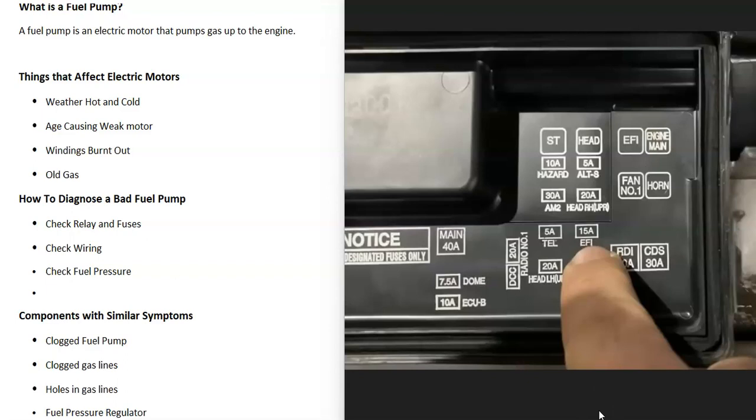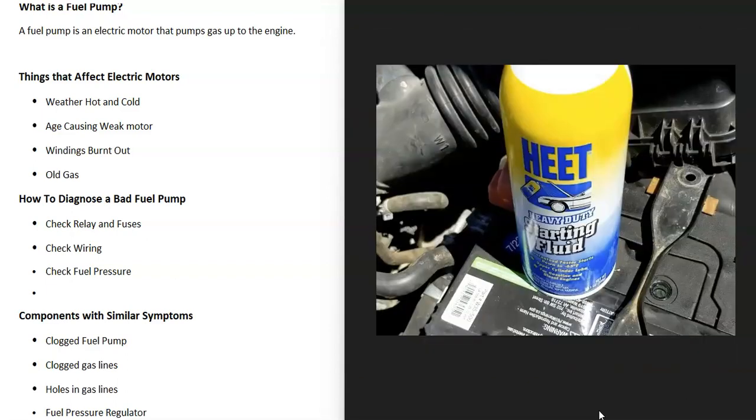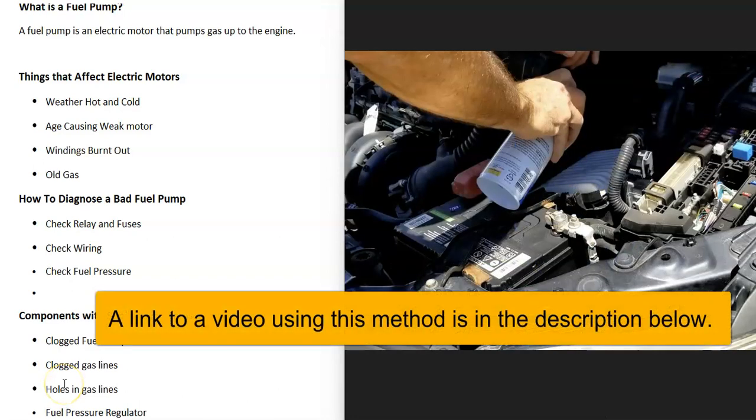There are a few methods to check if you have a bad fuel pump. A very common method that many mechanics use is they'll use starter fluid and spray right into the air intake, like right into the throttle body or right on the intake air filter. Then they'll go and see if the engine starts.